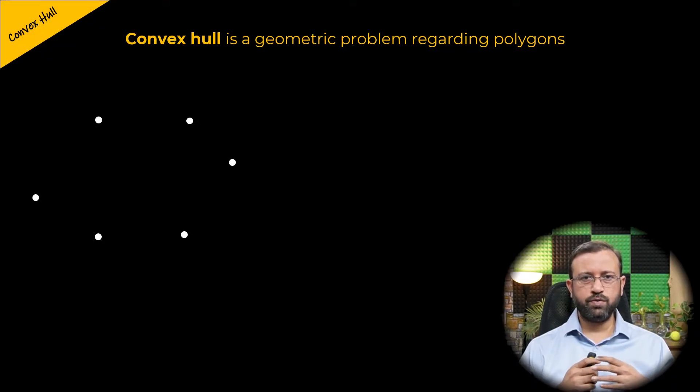A polygon is a closed figure with three or more straight edges. If we join these points in this way, we have a polygon.